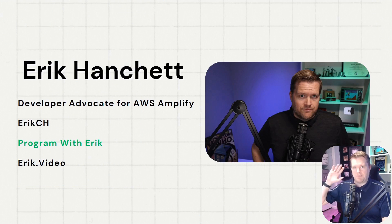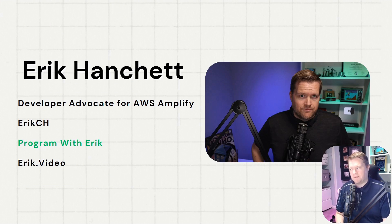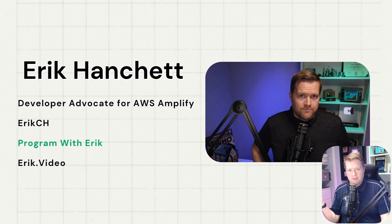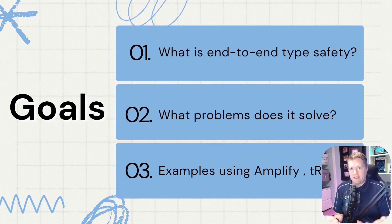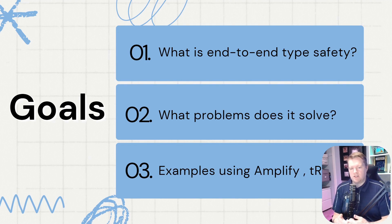My name is Eric. I'm a developer advocate for AWS Amplify, and I'm also a front-end engineer. You can always tweet me at ericch. Let's talk about the goals of this video: we're going to discuss what end-to-end type safety is, what problems it solves, and show some examples using Amplify, TRPC, Nuxt, and others.